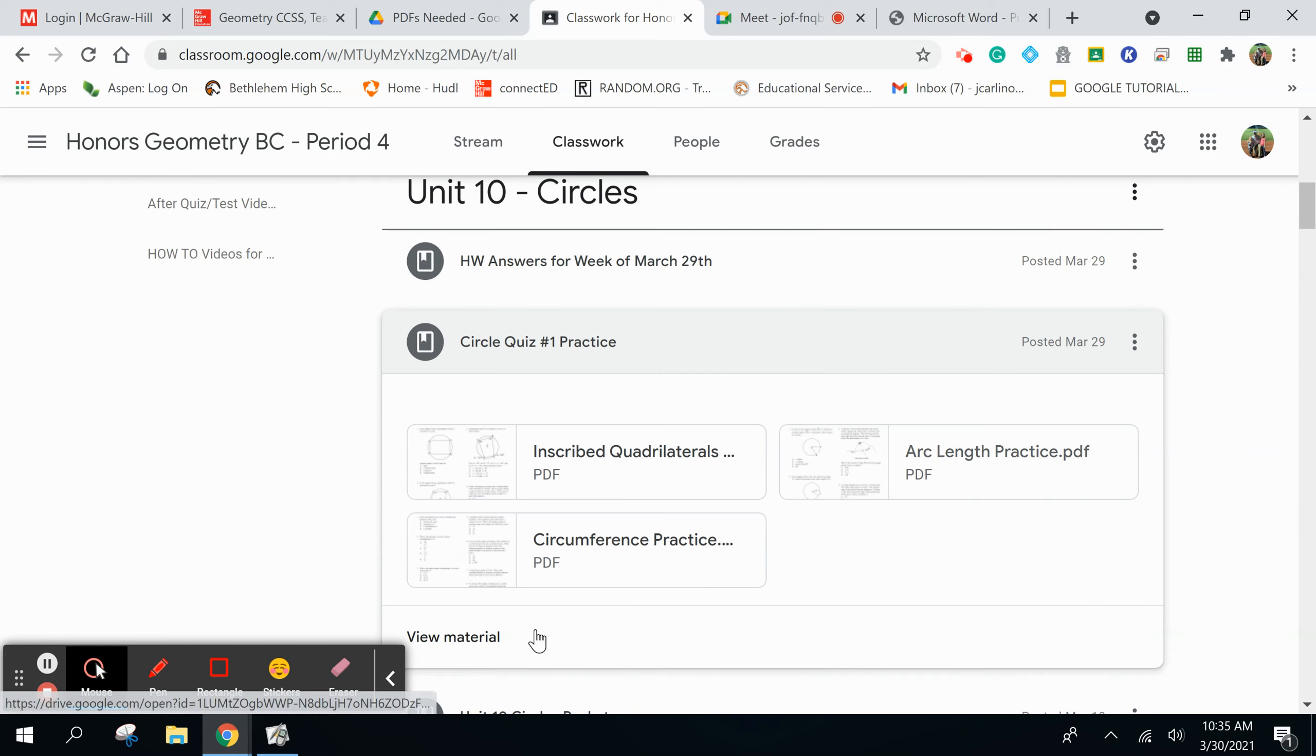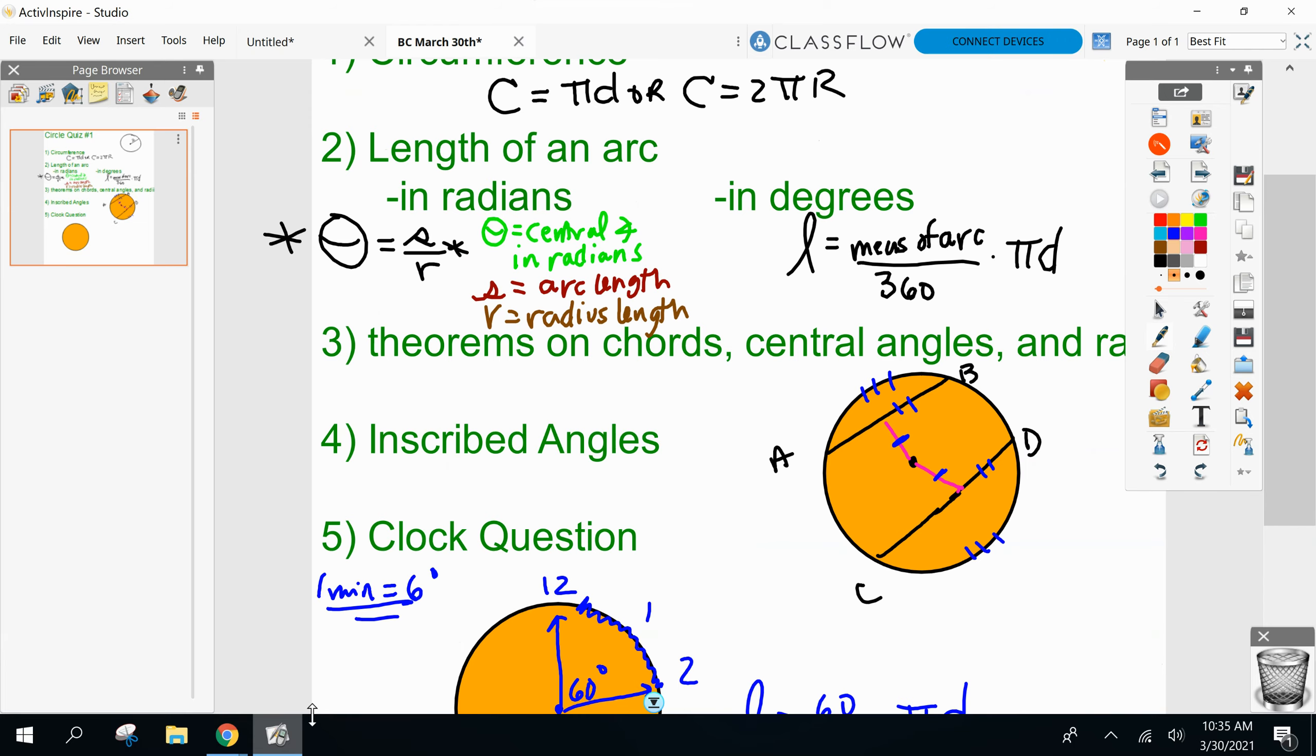We should also have a little bit between inscribed angle and central angle, right? How to find them. How do you find a central angle? How do you find an inscribed angle? Central angle is equal to its arc measure. Inscribed angle is half its arc measure. Any other questions before I let you go?